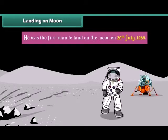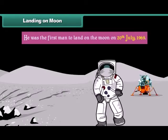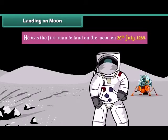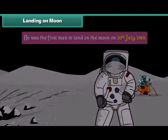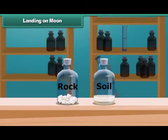Neil Armstrong was the first man to land on the Moon on 20th July 1969. He performed various experiments on the Moon and brought back samples of soil and rock.